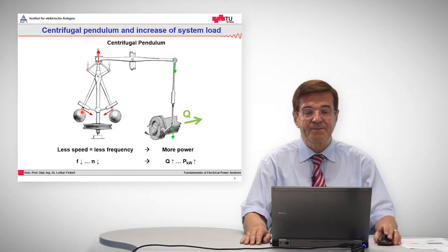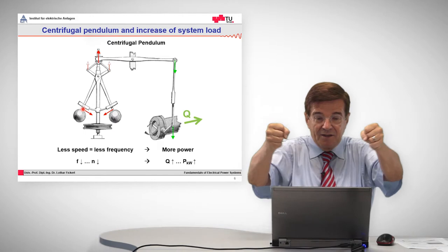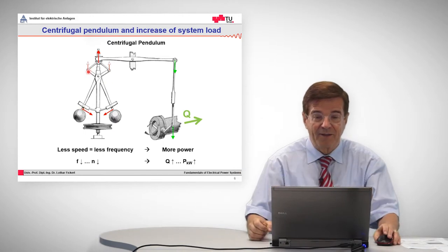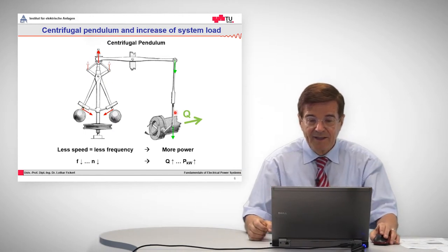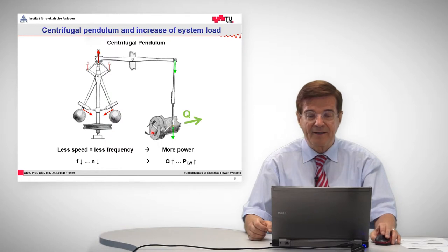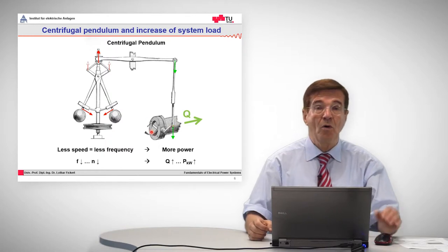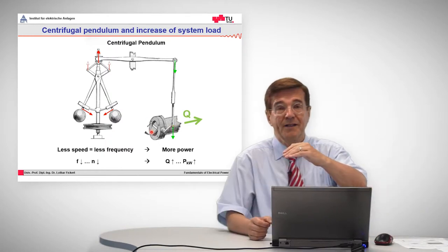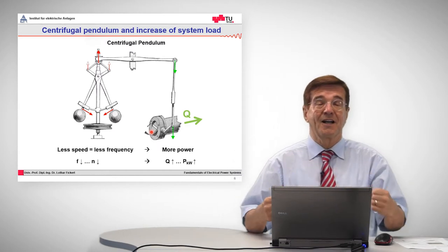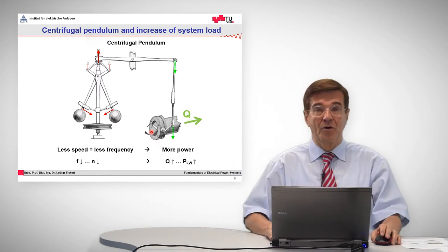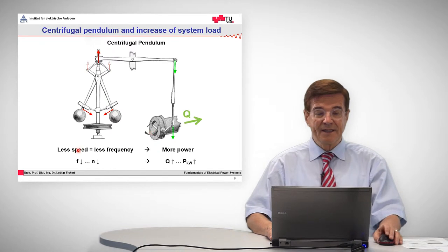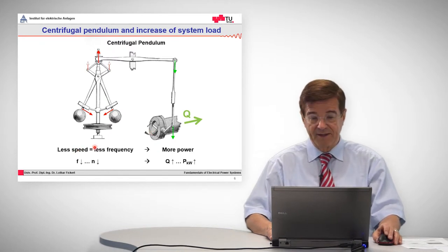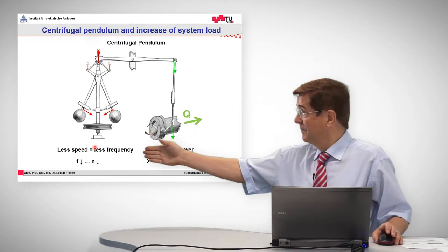And what happens here? In this pendulum, when it slows down, the balls will come together. And by way of this lever mechanism, it opens in the same way this throttle valve, more water goes through the turbine, and the turbine takes up speed and puts out more power. And that means less speed means less frequency. And that means more power.